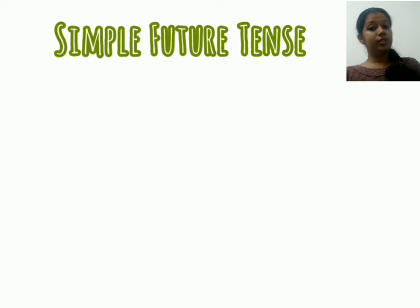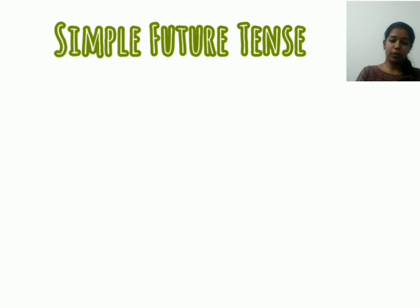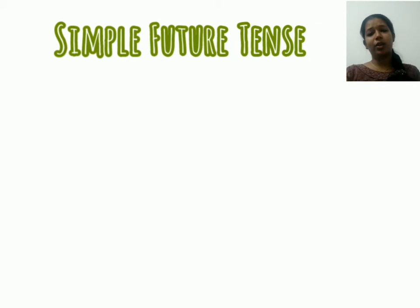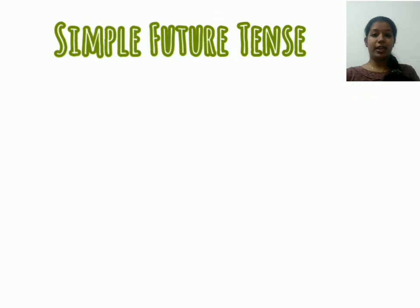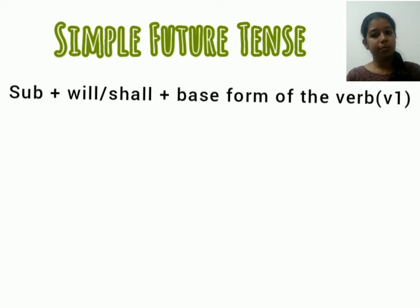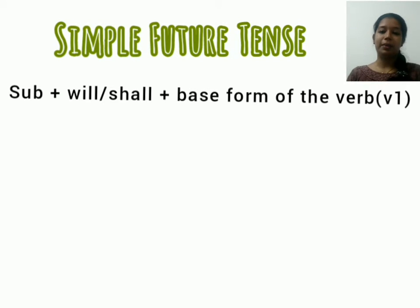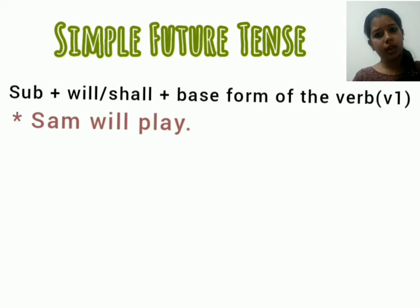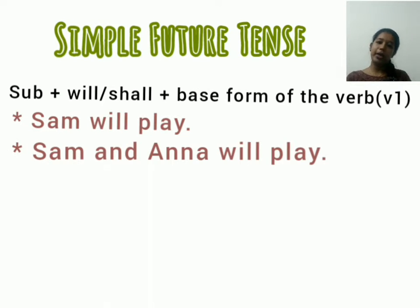Here also we have four subcategories. First, we can take simple future tense. All four future tenses are simple because we just need to add will or shall to the present tense family. The format is: subject plus will or shall plus base form of the verb (V1). For example, Sam will play, or Sam and Anna will play.